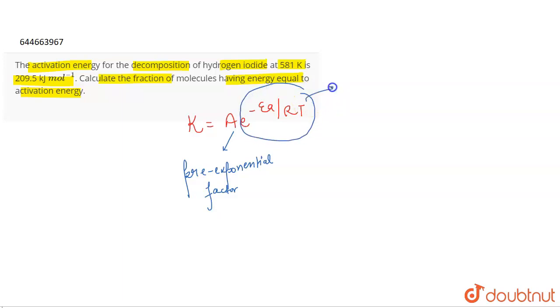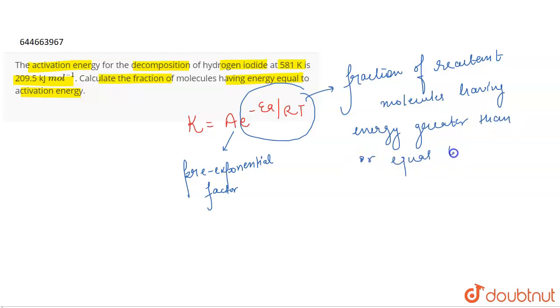And if we talk about this term, e to the power minus Ea by RT, this represents the fraction of reactant molecules having energy equal to, or greater than, or equal to activation energy. So this is what e to the power minus Ea by RT term represents.